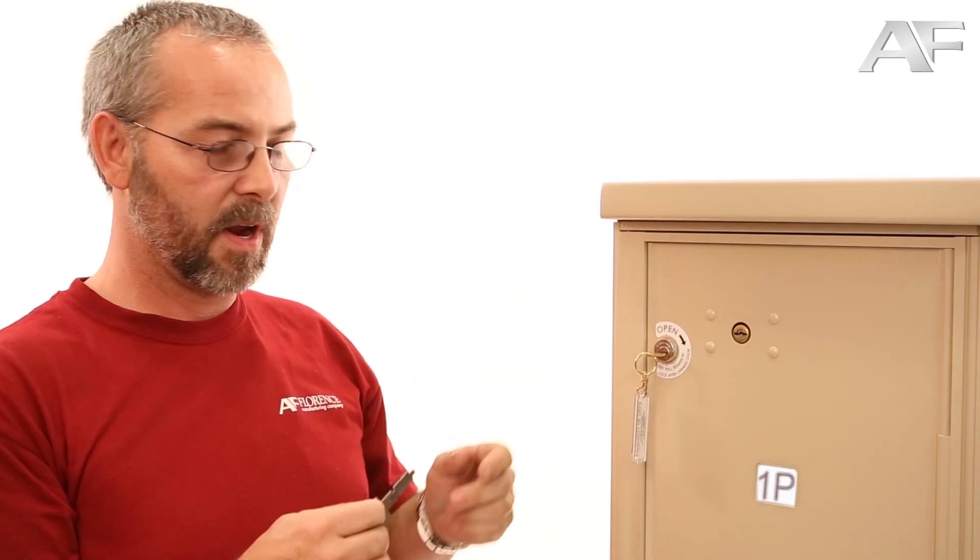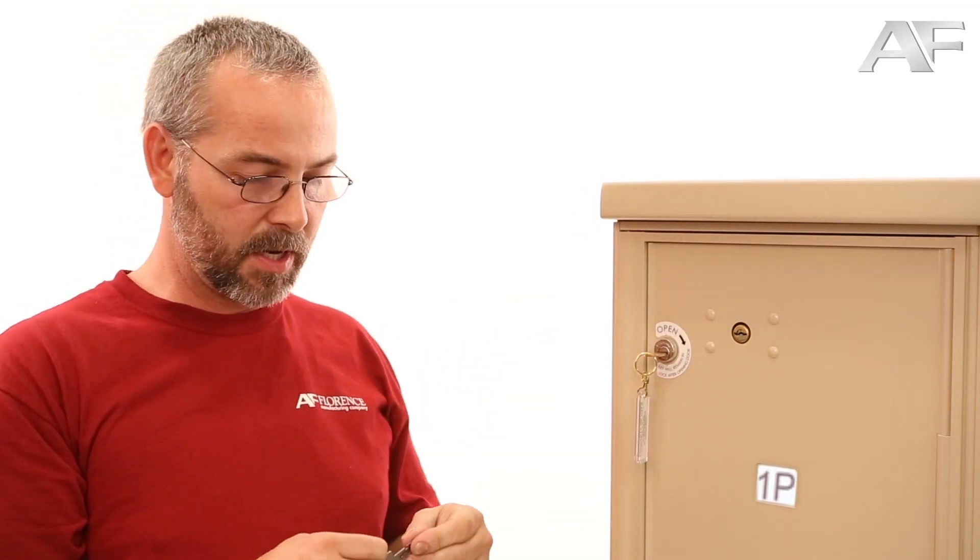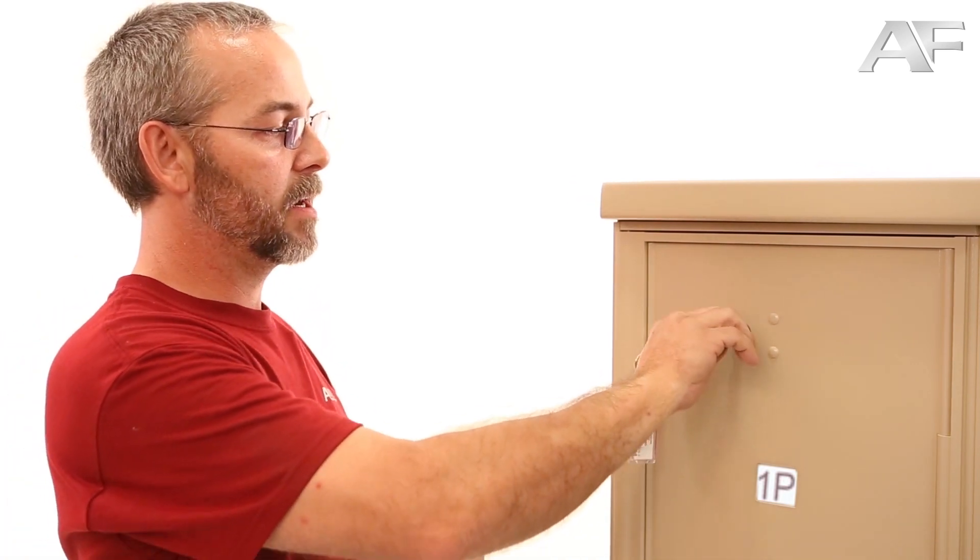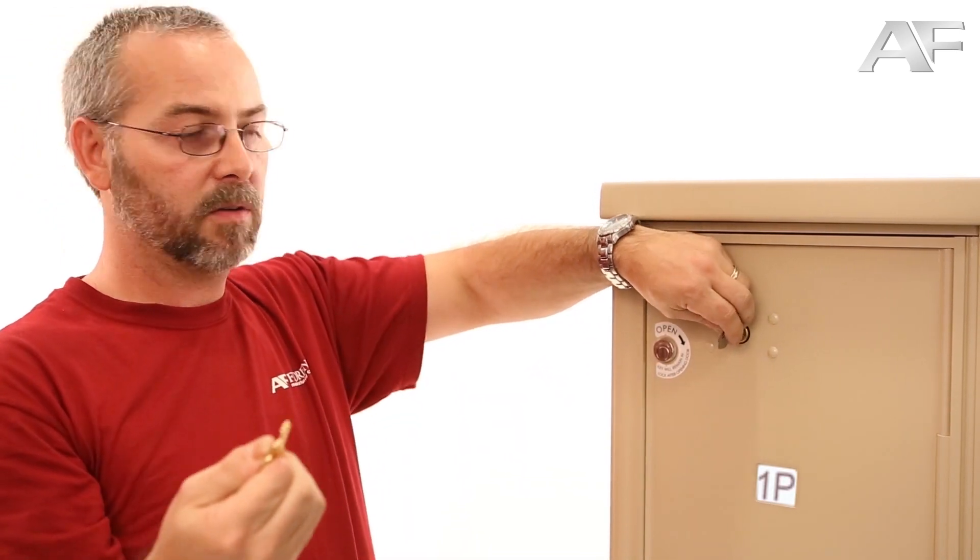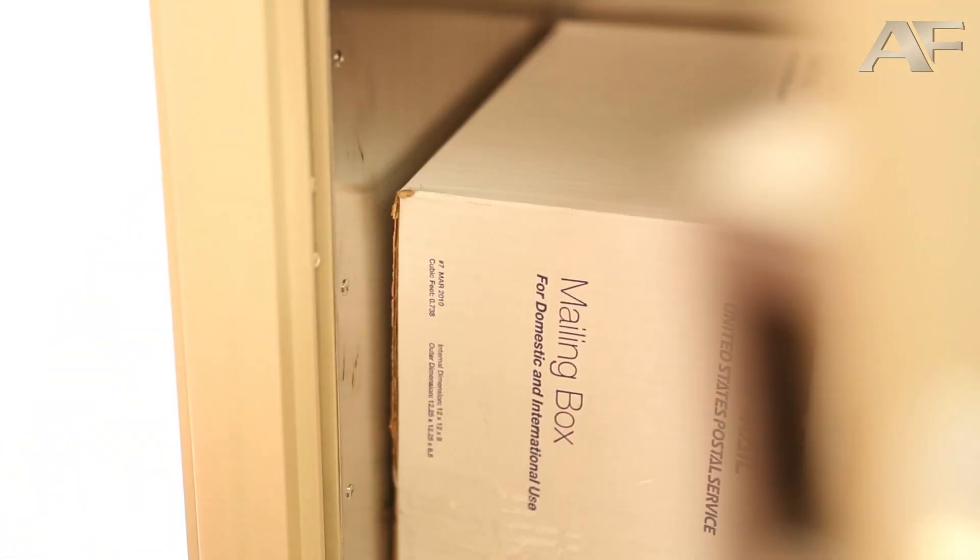The postman, whenever he comes in to put a package into this unit, he has a special key that the post office uses and they're able to put this key in here and unlock it. Thereby they're able to pull this key out and put it in your mailbox. Your package is secure until you arrive home from work to check your mail and get your package.